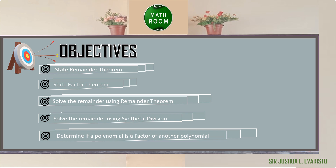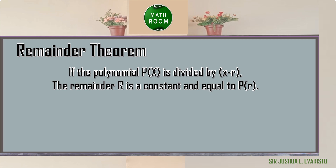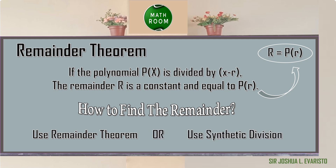Let's get started. Remainder theorem states that if the polynomial p of x is divided by x minus r, the remainder is a constant and equal to p of r. In simple terms, r is equal to p of r. To find the remainder when p of x is divided by x minus r, we can use the remainder theorem or synthetic division.